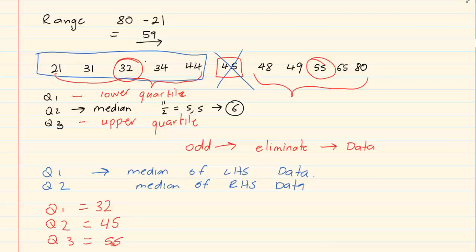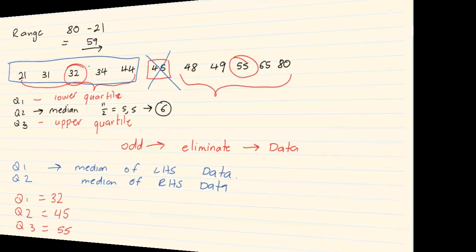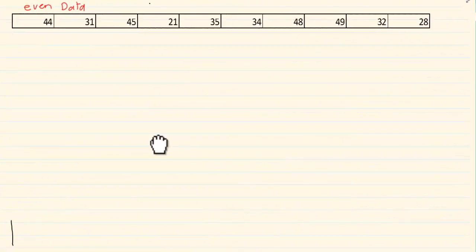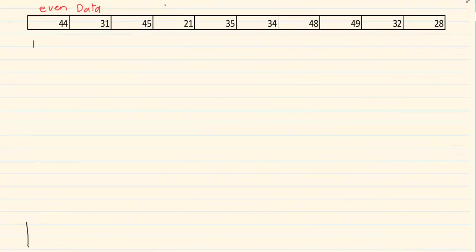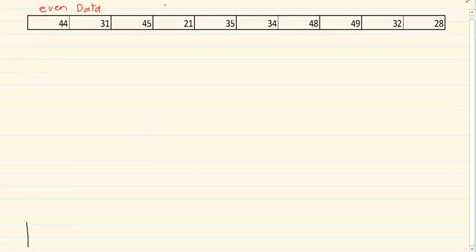So when you are doing odd-numbered data, because the median answer is part of the data, you eliminate that value before finding Q1 and Q3. Now let us do one that is slightly different — one that has even data. If we are going to put it in order, again you are going to use your tree diagram.